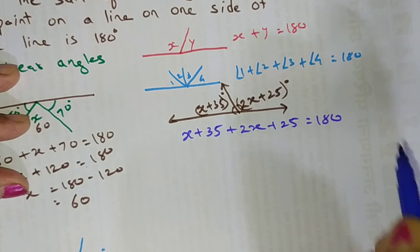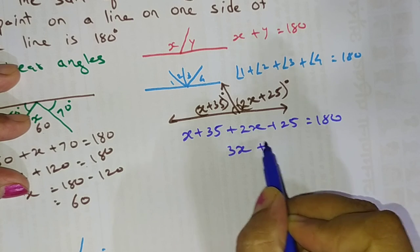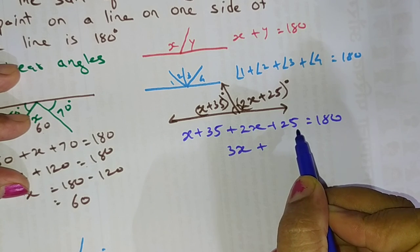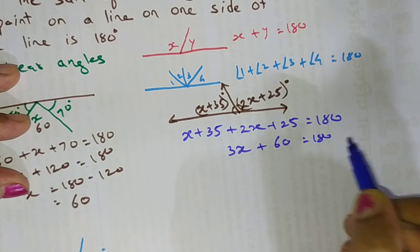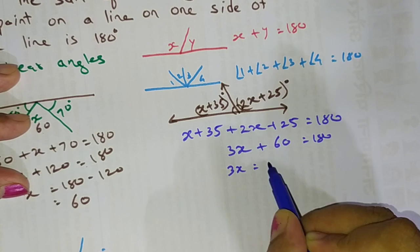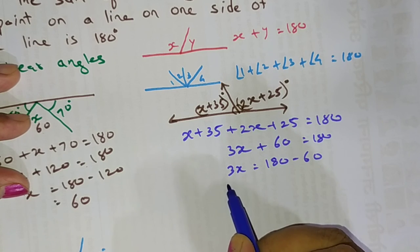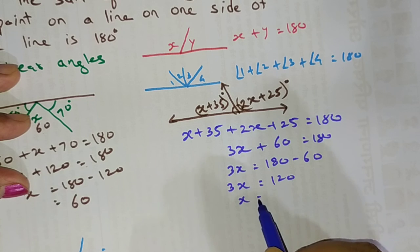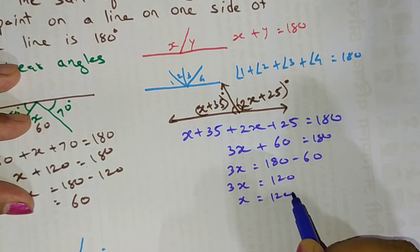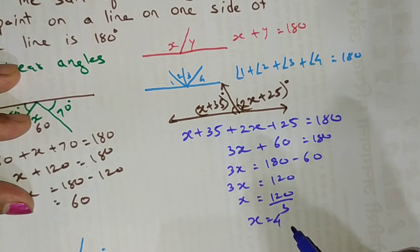By solving: 2x and x gives 3x; 35 and 25 add up to 60. So 3x plus 60 equals 180. Therefore 3x equals 180 minus 60, which gives 3x equals 120. So x equals 120 divided by 3, and the value of x is 40.